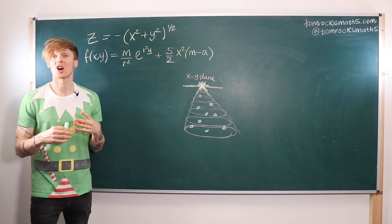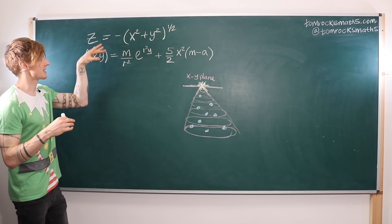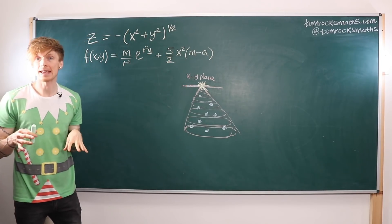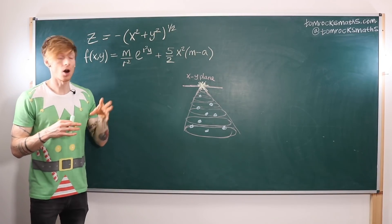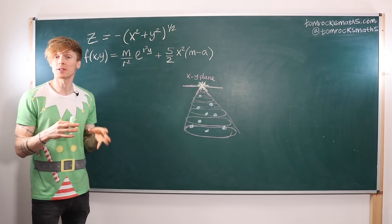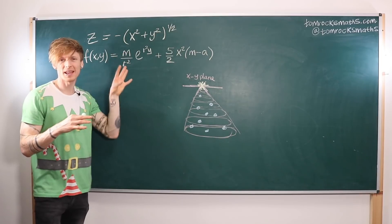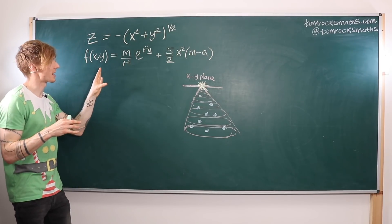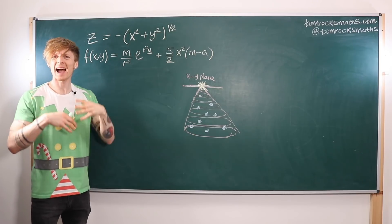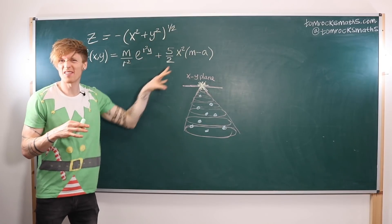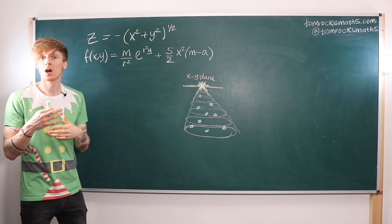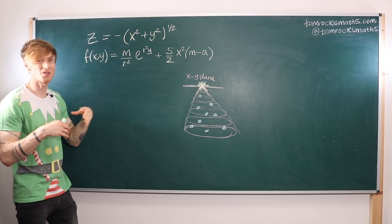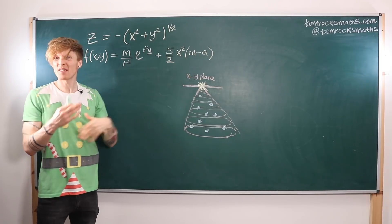Now let's look at our second function f(x,y) = (m/r²)e^(r²y) + (5/2)x²(m - a). We're going to be calculating some partial derivatives of this function. In fact we're going to be working out the divergence of f. But before I get to that, we're going to start by simplifying the functional form of f, grouping together these various constants to see what the real structure looks like.